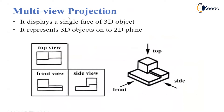First is the multi-view projection, in which we can get the different views of the same object so that we can represent a 3D object on a 2D plane. Here, as an example, we have considered an object and obtained different views: the top view, front view, and side view of the object.